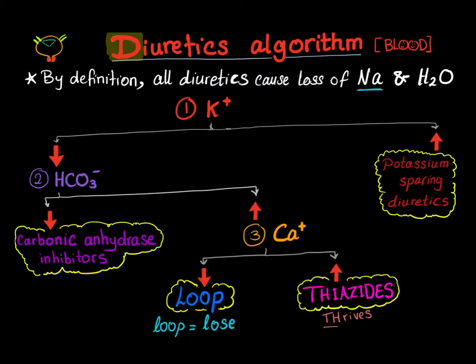Hi! New day, new topic. Now we're going to talk about the diuretics algorithm. This is an algorithm that will help you pick which diuretic the question is asking about. We are talking in this video about electrolytes in the blood, not in the urine. Electrolytes in the urine will be the next video. We'll talk about diuretics in the blood — for example, if you see hypokalemia or hyperkalemia, can you guess which diuretic was given? That's the question.